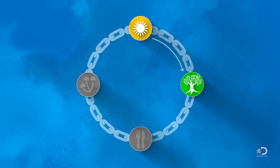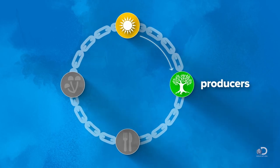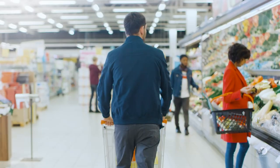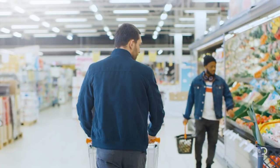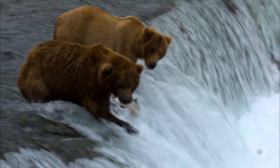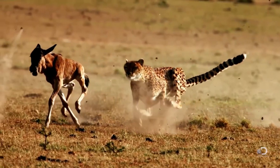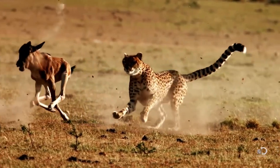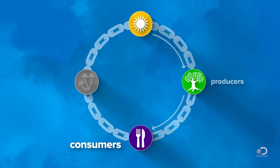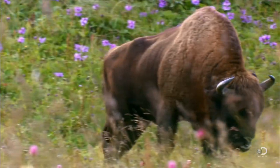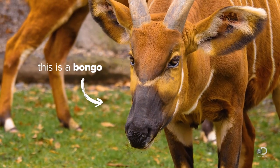Plants can make their own food, which is why they are called producers — they produce food without help from any other organisms. Animals, including us humans, cannot make our own food. We need to consume or obtain our nutrients from other sources, which makes us consumers. Many animals, from beetles to bison to bongos, are consumers that eat plants.